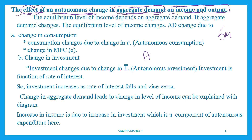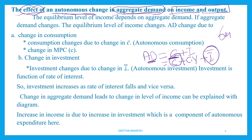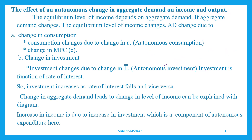If we consider aggregate demand in the two-sector economy, it includes consumption plus investment. Consumption can be written as C-bar plus CY, plus I-bar. So in this aggregate demand, C-bar and I-bar are what we call autonomous expenditure. Any change in those means an autonomous change in aggregate demand on income and output — that is what we will be discussing.